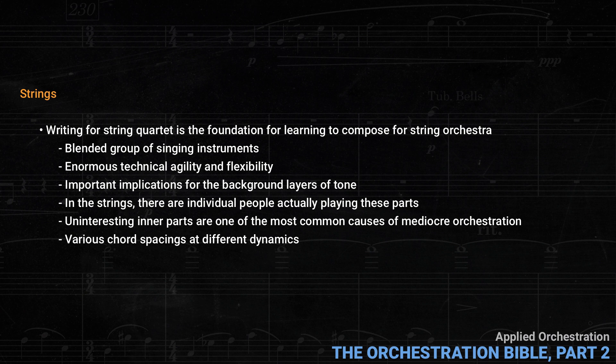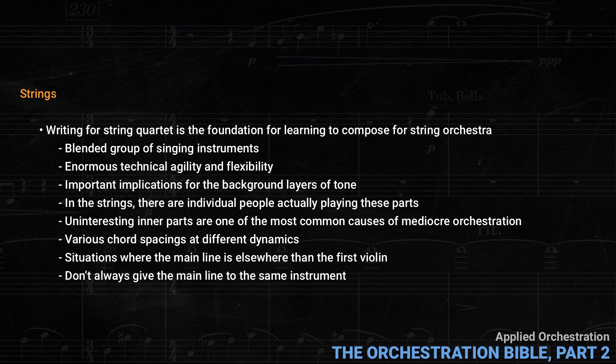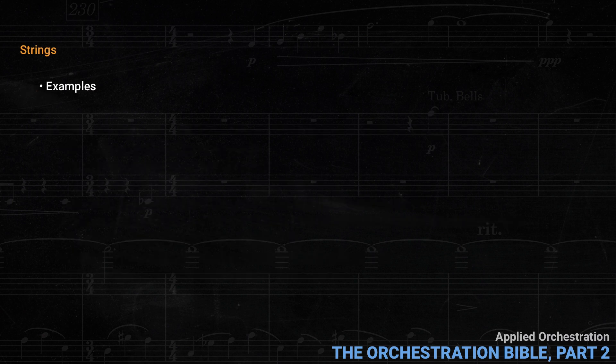Koechlin looks at various chord spacings and different dynamics. He also mentions situations where the main line is elsewhere than the first violin. This is an important point one can learn from string quartet orchestration: don't always give the main line to the same instrument. The quartet is an egalitarian ensemble where everyone deserves some time in the sun. This is an application of counterpoint, not in the sense of imitation or fugue, but simply as a requirement to look at each line individually to make it as interesting as possible. The first examples are in four parts, since that's the texture with an ideal balance between the main line and the secondary ones, as in standard chorale writing.